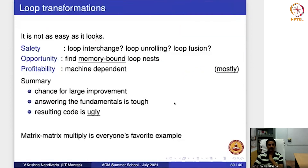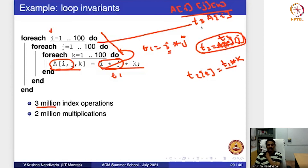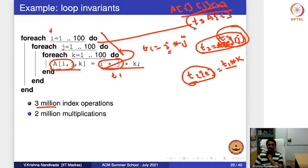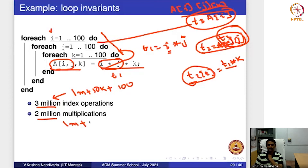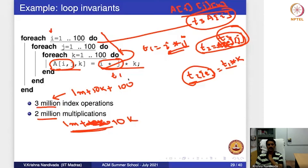How many index operations do I have now? There are 1 million index operations inside the k-loop, 10,000 index operations in the j-loop, and 100 in the i-loop — so compared to 3 million, it became 1 million plus 10k plus 100. The multiplications also reduce significantly. Do you see the impact of loop invariant code motion so far?